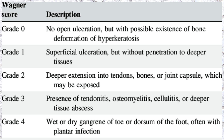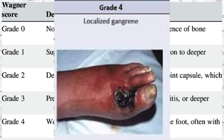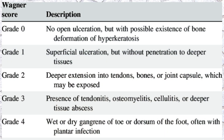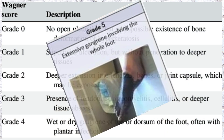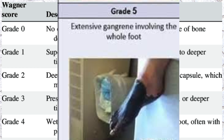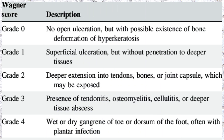Grade 4 is wet or dry gangrene of the toe or dorsum of the foot. Grade 5 is extensive gangrene of the foot indicating amputation.